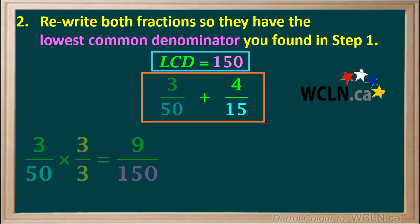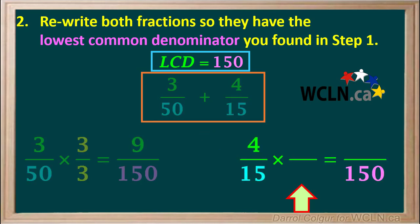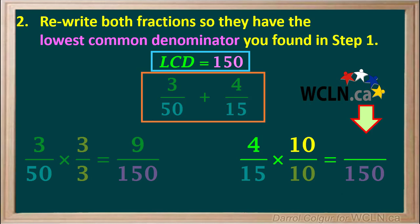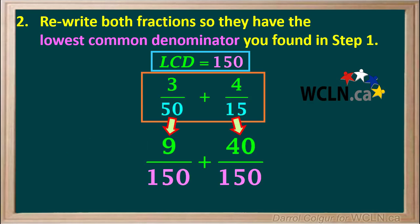Now we'll look at the other fraction, 4 fifteenths. To give it a denominator of 150, we must multiply 15 by 10. And to get the new numerator, we must also multiply the 4 by 10. 4 times 10 gives us 40 for our new numerator. So the fraction 4 fifteenths can be written as 40 over 150. So 3 fiftieths plus 4 fifteenths can be written as 9 over 150 plus 40 over 150.